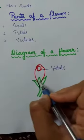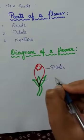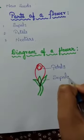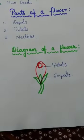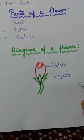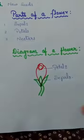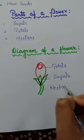The outer part of the flower, which is green in color, is known as sepals. The main function of sepals is to protect the bud from getting damaged. Now, the third part of a flower is nectar.